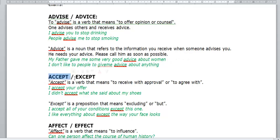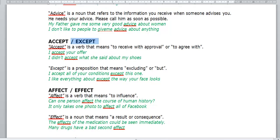Next, we have accept and except. Accept is a verb that means to receive with approval. You say yes or to agree with. For example, I accept your offer. Or, I didn't accept what she said about my shoes. Except is a preposition that means excluding or but. For example, all of your conditions except this one but not this one. I like everything about her except the way her face looks. I like everything about you except the way your face looks.